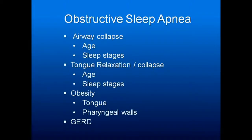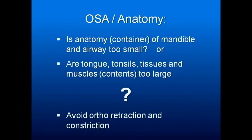Obstructive sleep apnea airway collapse is made worse with age and deeper levels of sleep. Tongue relaxation collapsing into the throat increases with age and deeper levels of sleep. Obesity decreases the effectiveness of the tongue muscles, enlarges the base of the tongue — there's a lot of fat that builds up there — and builds up the pharyngeal walls, all made worse by GERD. So your question: is the anatomy — the container of the mandible and airway — too small? Or are the contents — the soft tissues — too large?